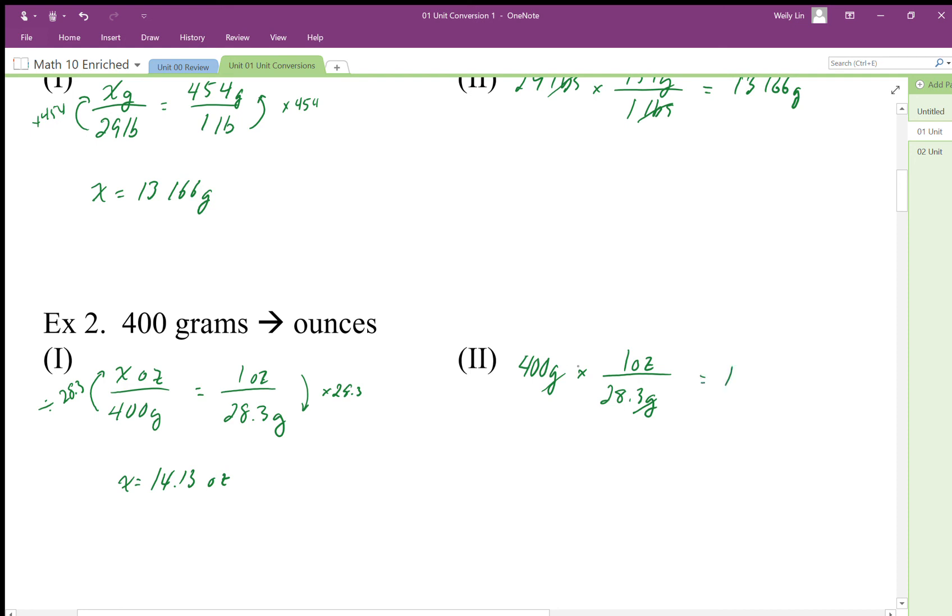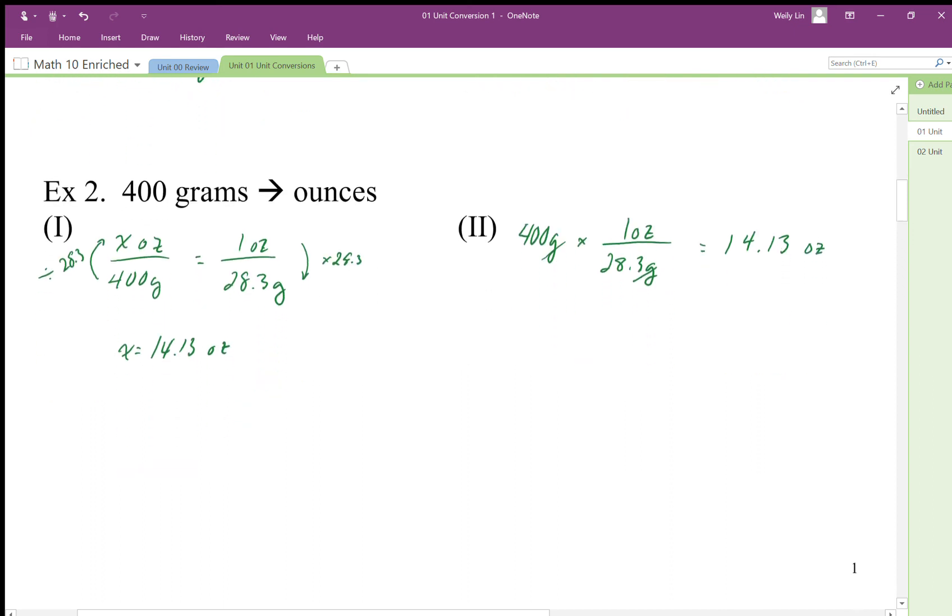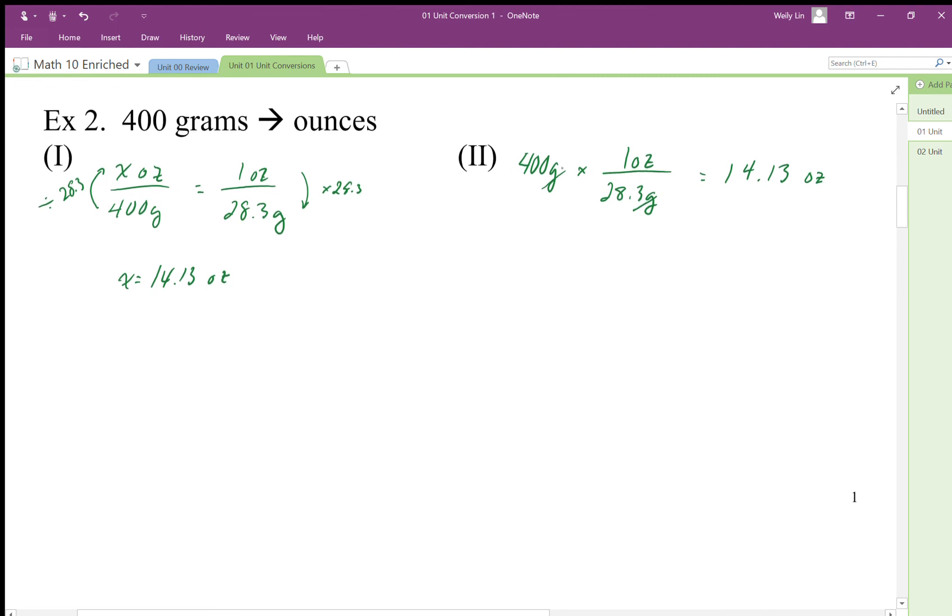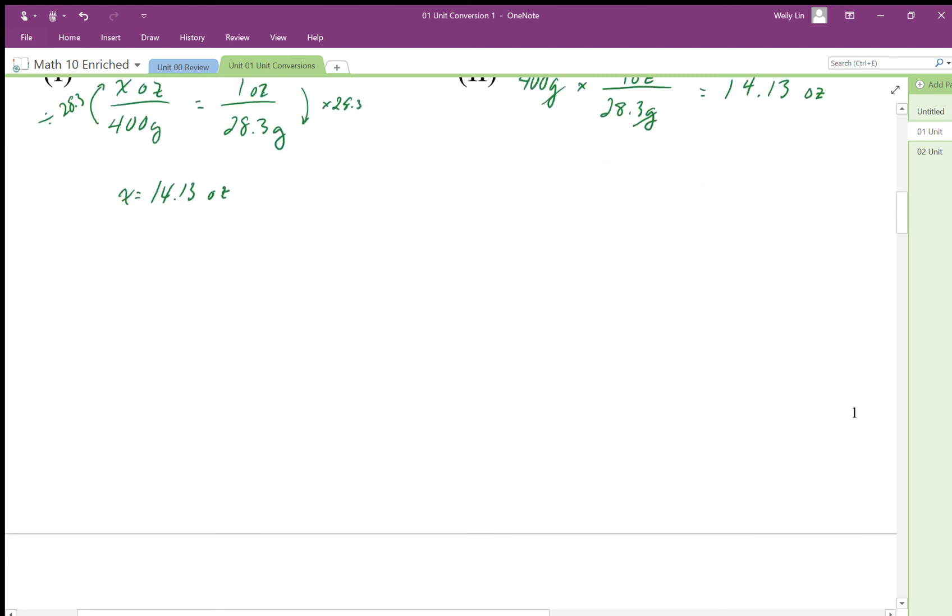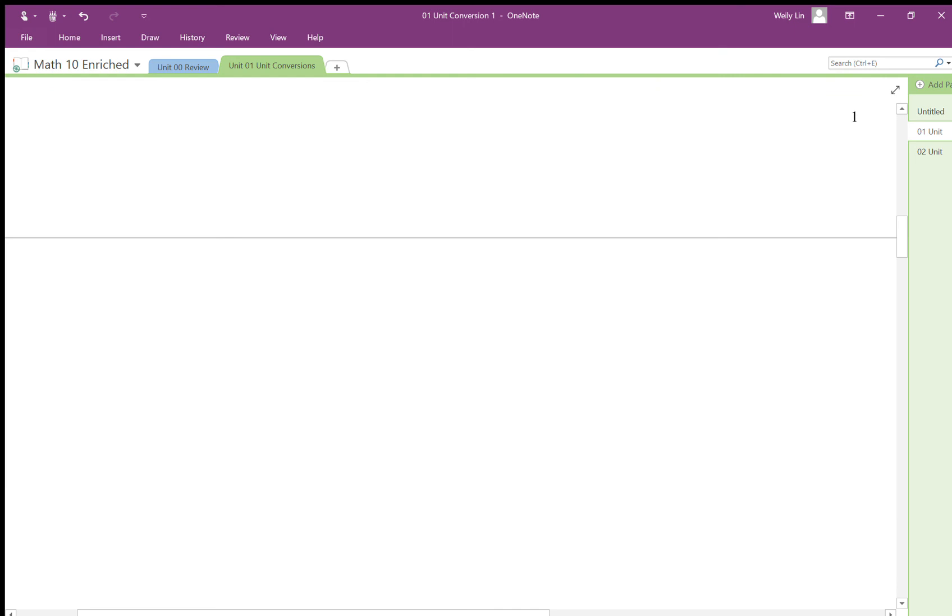We just need to make sure the times cancel the divide, and we end up with 400 times 1 divided by 28.3, which is 14.13 ounces. So it's the same thing. You can see how these things are connected, but we want to start using this second method more because it's a more efficient way to solve these types of problems.